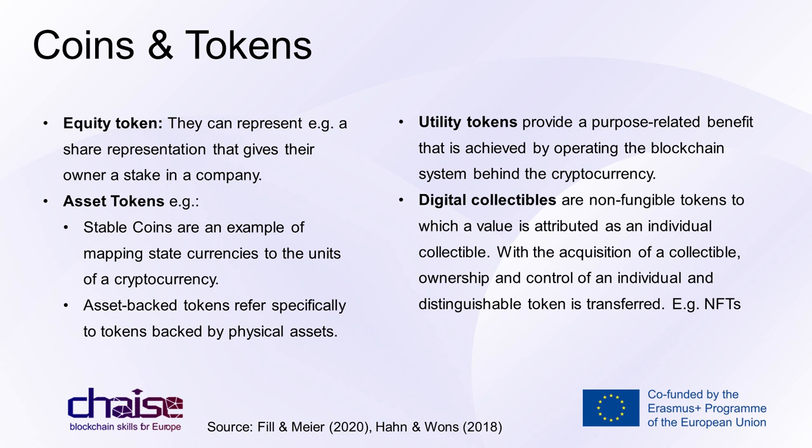Here are a few examples of coins and tokens. Equity tokens represent a share giving the owner a stake in a company. There are also asset tokens — we can differentiate between stable coins and asset-backed tokens. Stable coins map state currencies to units of a cryptocurrency and should ideally be exchangeable one-to-one with the pegged national currency. Asset-backed tokens refer to tokens backed by physical assets such as gas, oil, gold, or other valuable materials traded on the stock exchange.